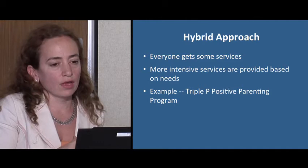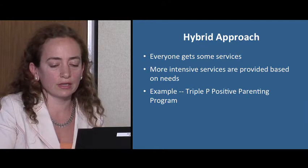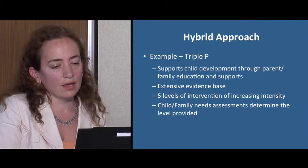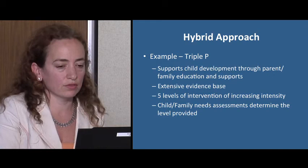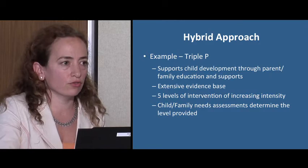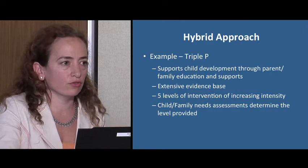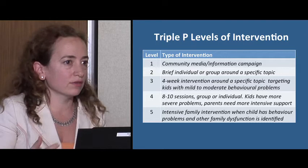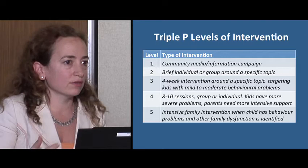One example of combining the two approaches is the Triple P — Positive Parenting Program. It's received a lot of empirical attention, which is nice since many interventions aren't well studied. The goal is to support child development through parent and family education. What's interesting is that there are five levels of intervention of increasing intensity, and the specific intervention a child and family gets is based on their needs.